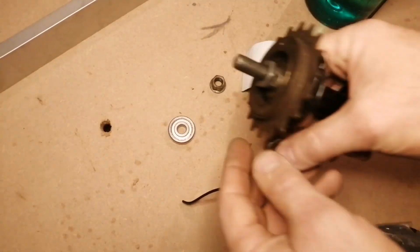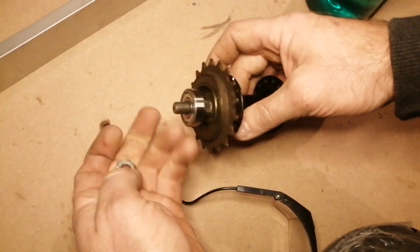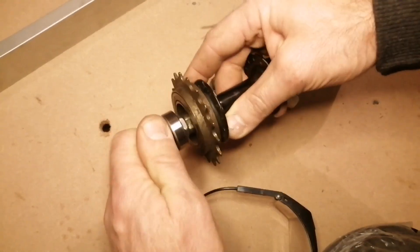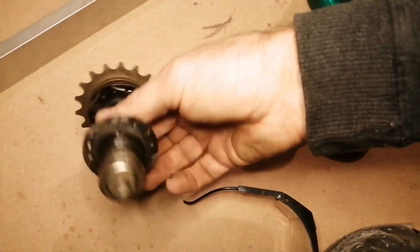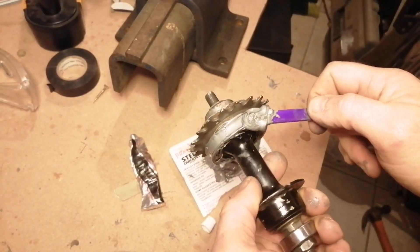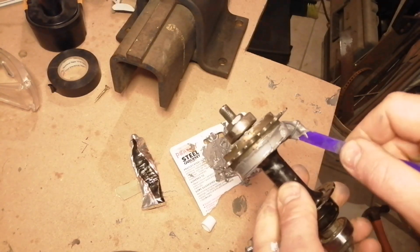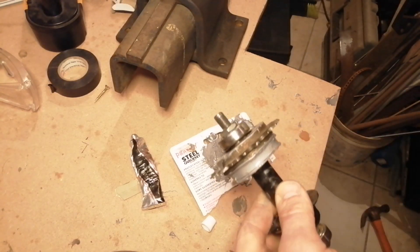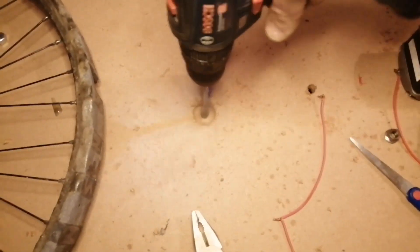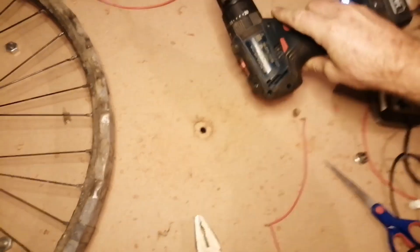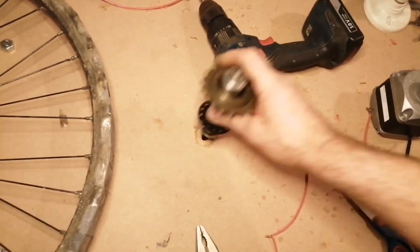I cut the sprockets and bearing housing off another bicycle wheel and added bearings and glued the sprockets so it won't move. Then I drilled a hole just deep enough to hold the bearing, and I made a bracket to hold the bearing shaft in place.